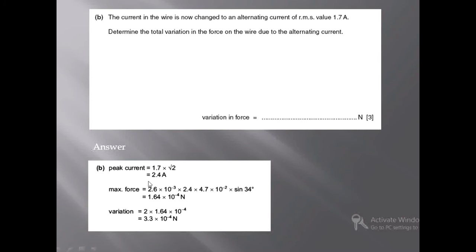At this peak current there will be the maximum force on the wire. To calculate the force we use F = BIL sinθ. All values are the same as in the previous part, except the current is now 2.4 ampere, and we get the maximum force of 1.64 × 10⁻⁴ newton.